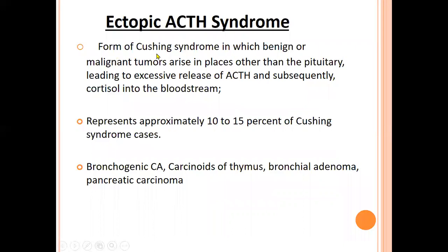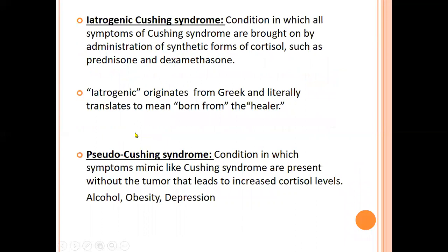Ectopic ACTH syndrome is the form of Cushing syndrome in which a benign or malignant tumor arises in places other than the pituitary, leading to excessive release of ACTH and ultimately cortisol in the blood. This accounts for about 10 to 15 percent of Cushing syndrome. The three major causes of ectopic ACTH syndrome are bronchogenic carcinoma, carcinoid tumors, and pancreatic carcinoma.